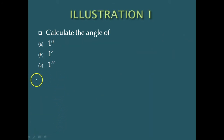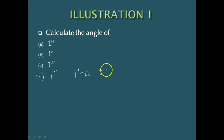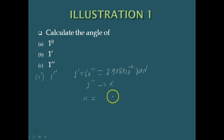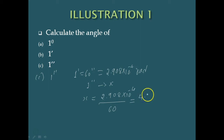Similarly for part C, we find the value for 1 second of arc. Since 1 minute of arc equals 60 seconds of arc, and 1 minute of arc equals 2.908 × 10⁻⁴ radians, we divide by 60 to get 4.85 × 10⁻⁶ radians for 1 second of arc.